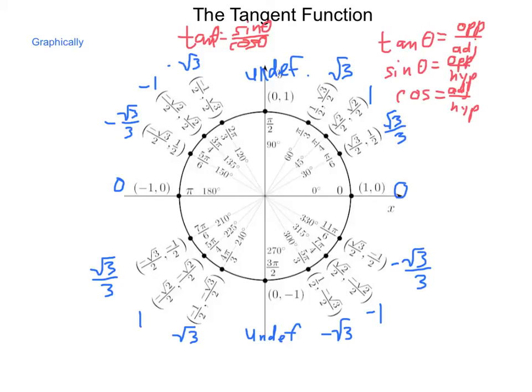Because in one rotation of the unit circle, we repeat our graph, our period of this function is a little different than what we had for the others.